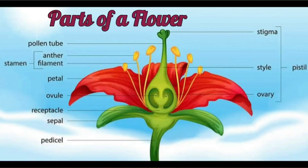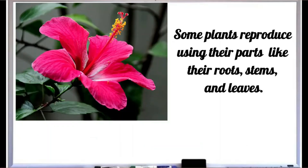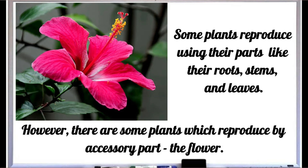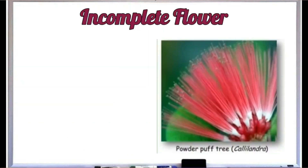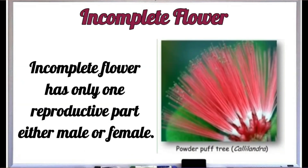The parts of a flower. Some plants reproduce using their parts like the roots, stems, and leaves. However, there are some plants which reproduce by accessory part, the flower. Incomplete flower has only one reproductive part, either male or female.